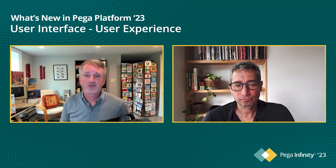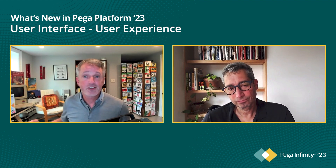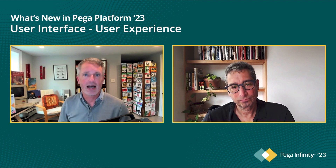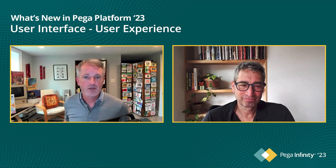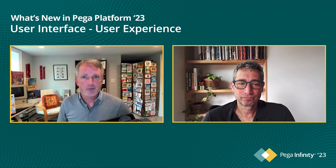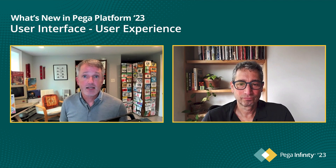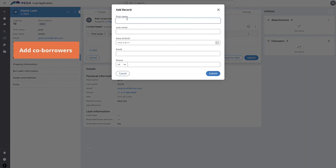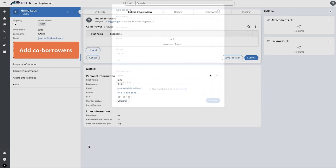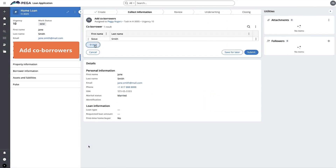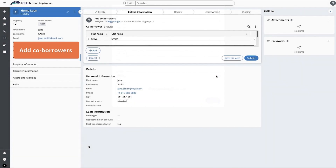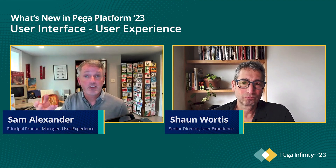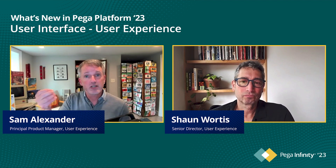Another big category of improvements critical for end users is list data. Pretty much all Pega applications rely on list data, and Infinity 23 includes new improvements around that. The first is embedded data - embedded list data captured as embedded data lets users capture and store list data inside a case. Often those records have many fields resulting in horizontal scrolling and accessibility challenges. Infinity 23 remedies that with a modal dialog for editing or creating new items in the embedded data list.